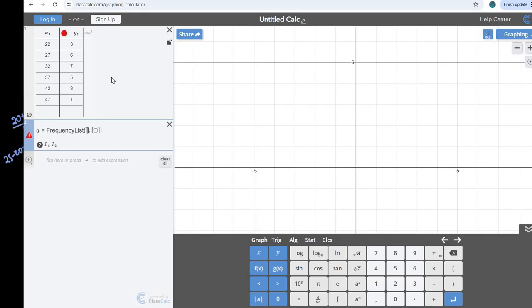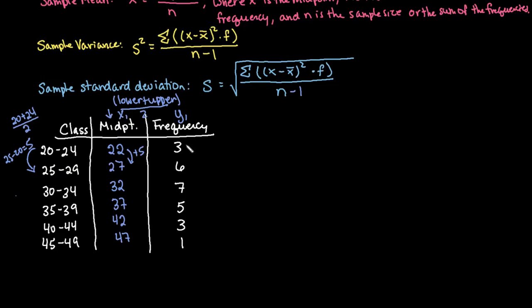So I'm going to create a frequency list from my list up here. My L1 is going to be what is my first list, so that's my x1 value. That's going to be my midpoints. And then my second list is y1, which represents the frequencies.